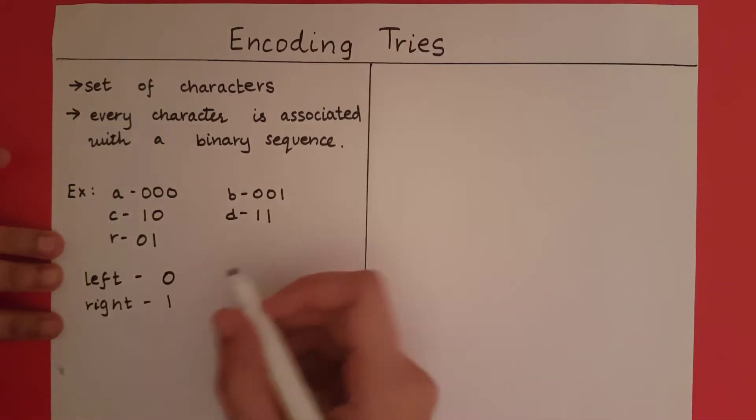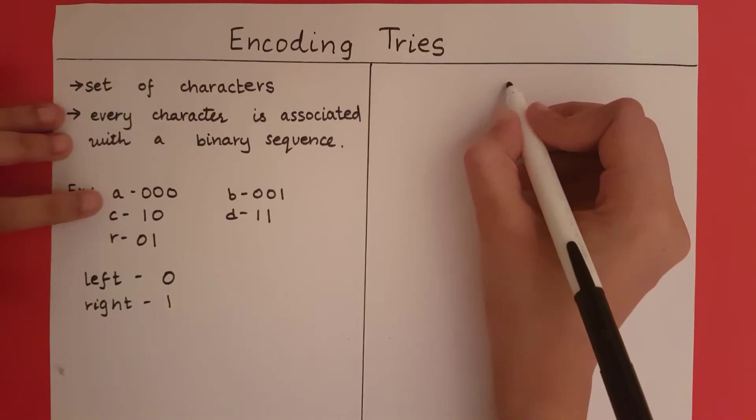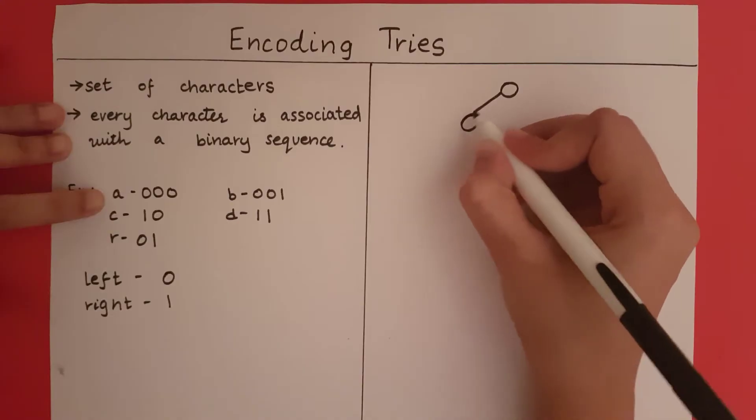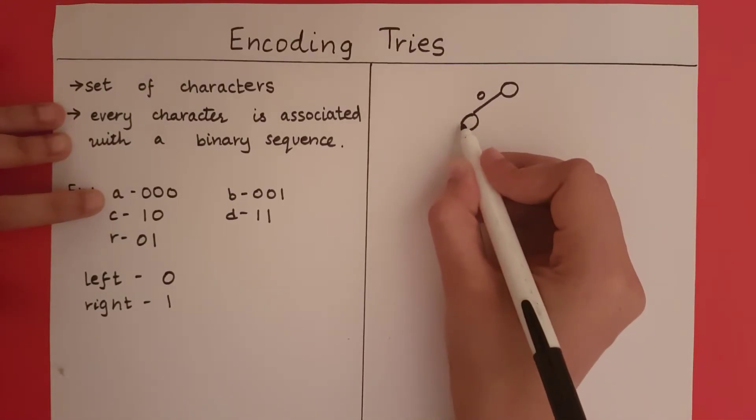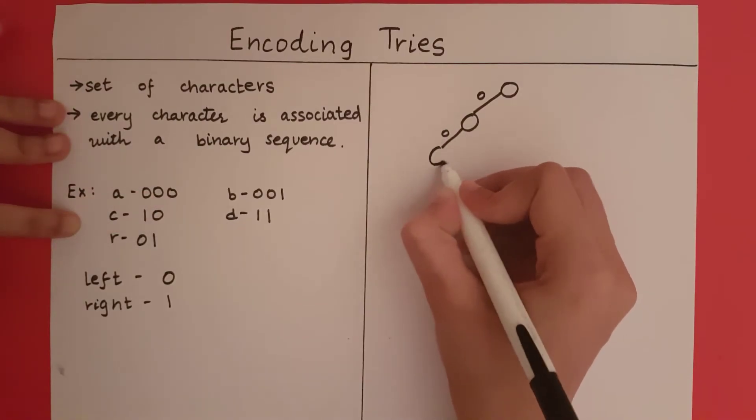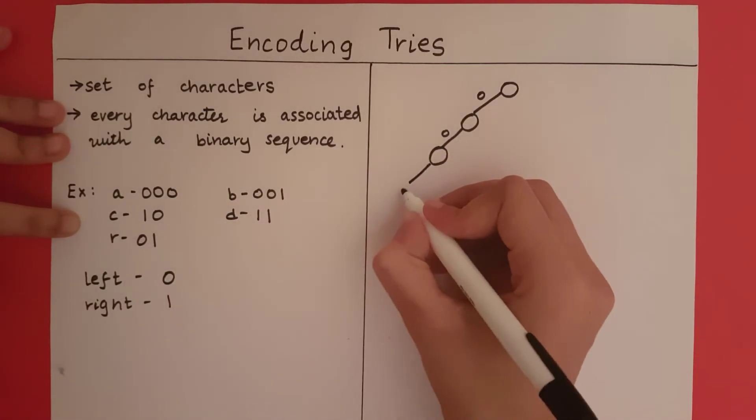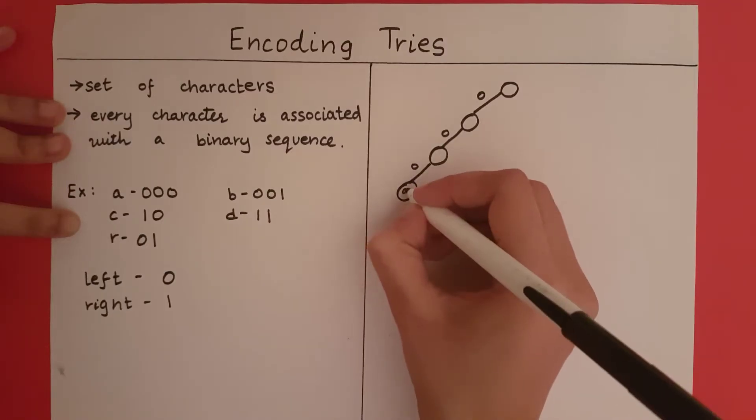So let's see what I mean by this. Let's take A, for example. So I have a root here. I am going to go left first. This will give me one 0. Then I need another 0, so I will go left again. So I will get another 0. Now A has another 0, so I will go left again. And over here I am going to store A.